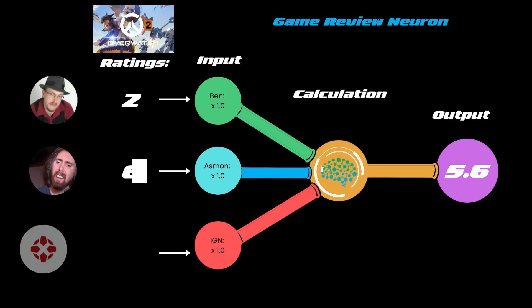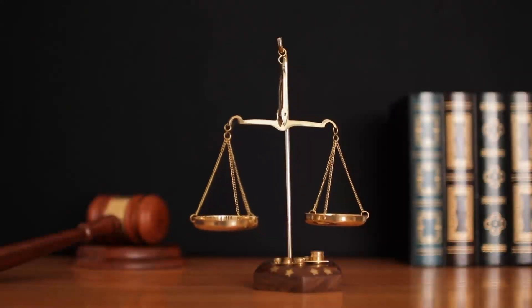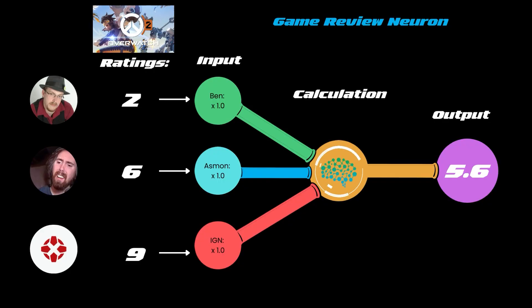The first game we are reviewing is Overwatch 2. Ben has decided to give this game a score of 2, Asmongold has decided to give it a score of 6, and IGN has given the high score of 9. At first, the critics' opinions all carry the same weight and are counted equally. We enter the inputs to the artificial neuron, do some basic math, and get an average overall score of the game Overwatch 2.